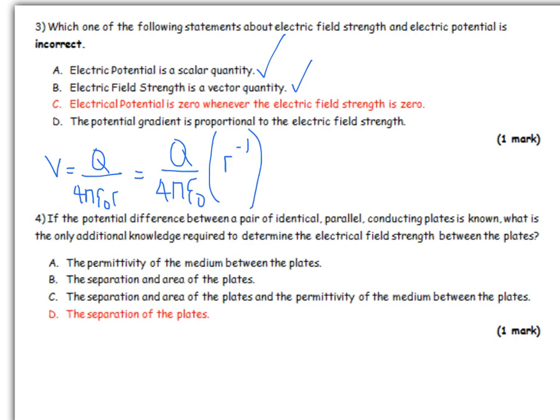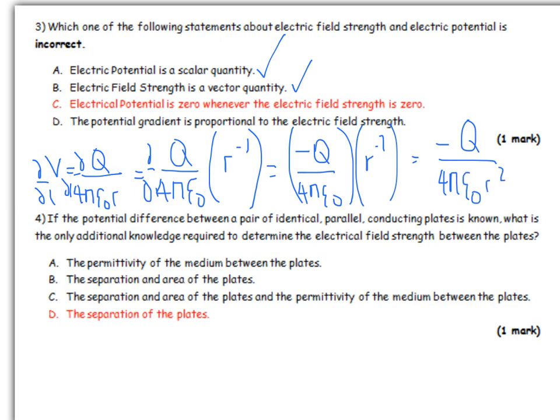So if we take the derivative of that with respect to r, d/dr is going to be minus q over 4πε₀r squared. So now we've got this r squared term on the bottom line. That is going to be proportional to the electric field strength there. Apart from this minus sign, which you might not necessarily know about in terms of field strength, this is definitely proportional to electric field strength, which means this fourth one must be true.